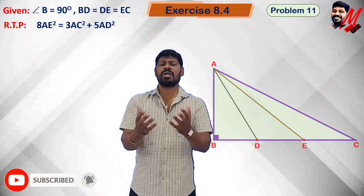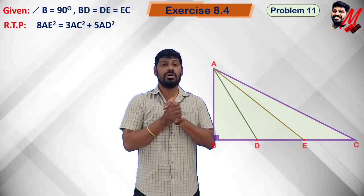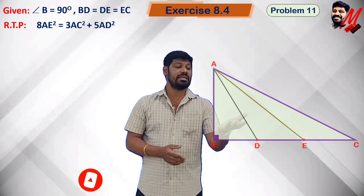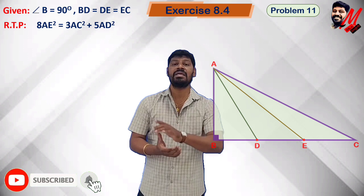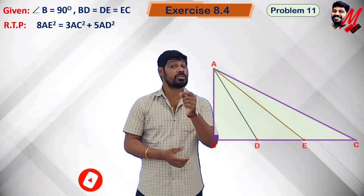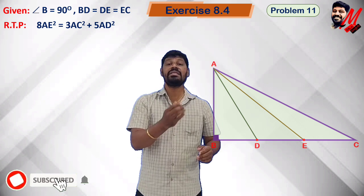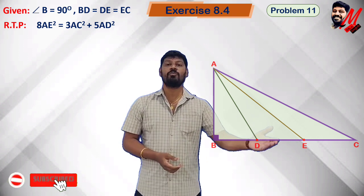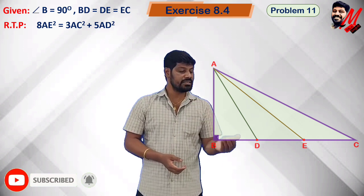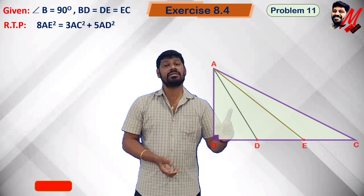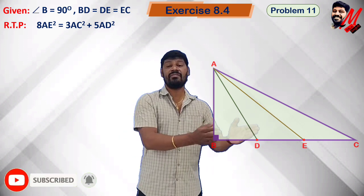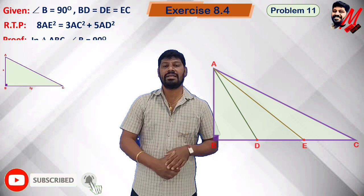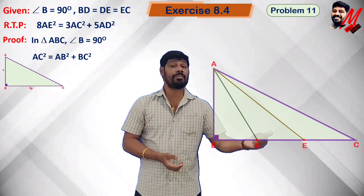This is true. It's very simple using the Pythagorean theorem. I will start with the big triangle ABC. Looking at triangle ABC, which is a right triangle, we apply the Pythagorean theorem. Let AB equal X and the three equal parts of BC each equal Y, so BD equals Y, BE equals 2Y, and BC equals 3Y.